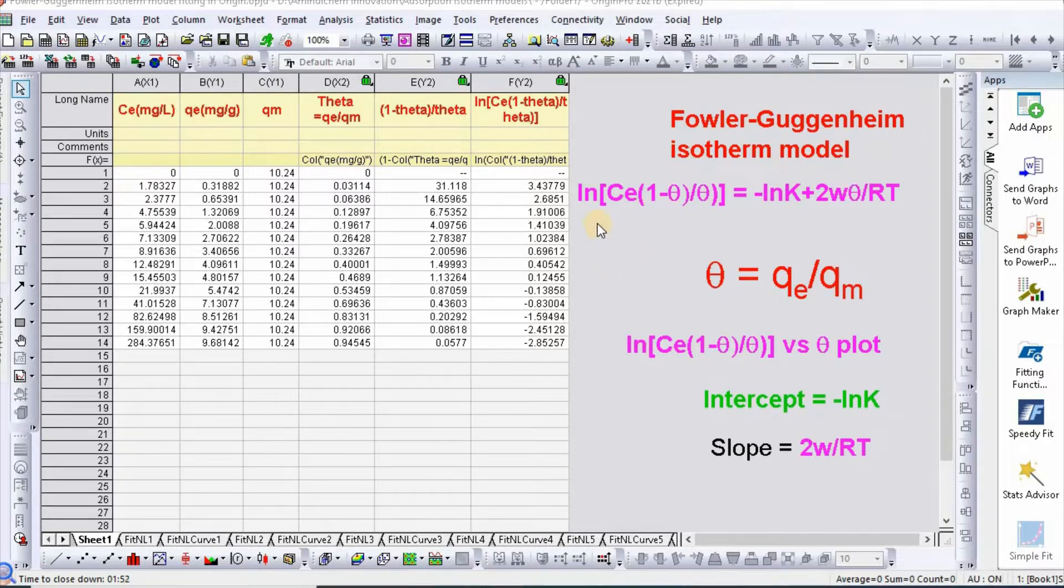This isotherm can be written as ln[Ce(1-θ)]/θ = -ln(K) + 2wθ/RT, where θ equals surface coverage, equal to Qe/Qm. A plot of ln[Ce(1-θ)]/θ versus θ will give you an intercept of -ln(K) and slope 2w/RT. Therefore we can easily calculate K and w.